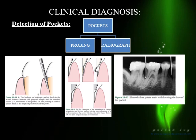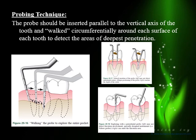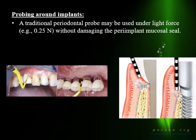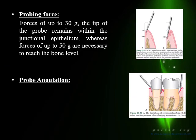To detect a pocket: probing depth greater than 3 mm, and radiographic assessment showing bone loss. The probe is always held parallel to the long axis of the tooth to avoid measuring buccal to lingual instead of coronal to apical, and it is walked circumferentially around each tooth surface to the day of deepest penetration. For probing around implants, use a light force of 0.25 Newtons without damaging the peri-implant mucosal seal — ideally use a plastic probe.